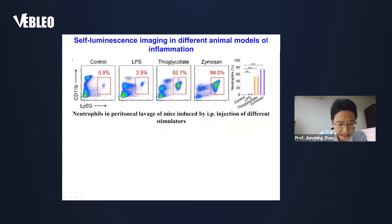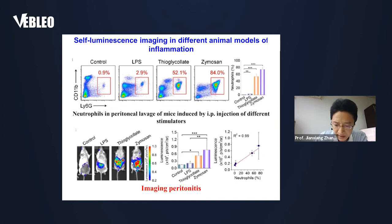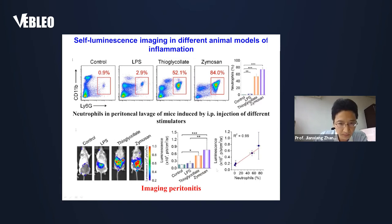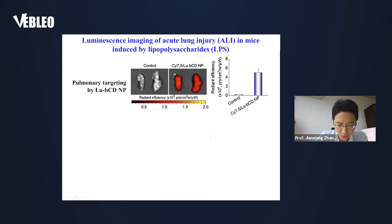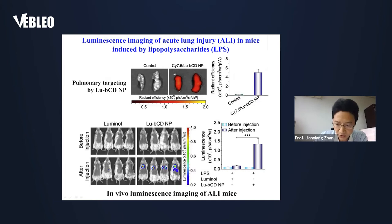Then we examined the afterglow luminescence imaging in different animal models of inflammation. First, our nanoprobe showed excellent imaging capability in a mouse model of PMA-stimulated neutrophils. In this case, the luminescence intensity is well-correlated with the number of neutrophils in peritoneal lavage. In a mouse model of acute lung injury induced by lipopolysaccharide, intravenously injected nanoprobes can passively accumulate in the lung. Moreover, our nanoprobe showed excellent luminescence imaging performance, which is more effective than free luminol.